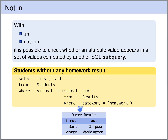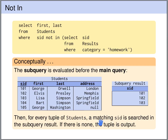On the next slide we have this in a bit more detail. The subquery result computed by this subquery is this table. So we select the SID — the student ID — from all the homework results. So we get all the student IDs of students that have submitted a homework. The result will be the table that contains 101, 102, and 103.